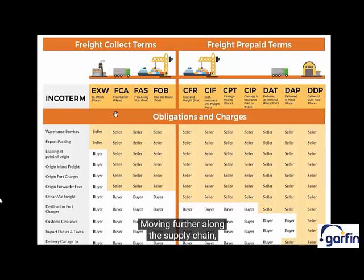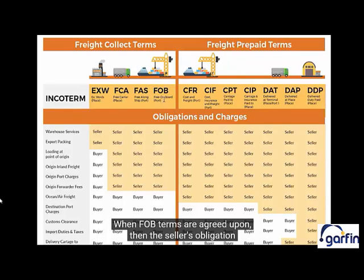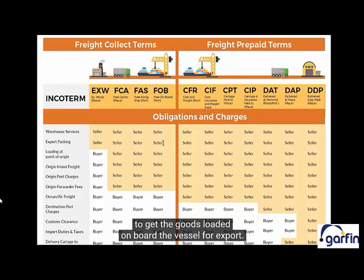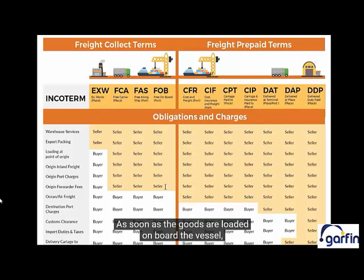Moving further along the supply chain, there are FCA, FAS, and FOB Incoterms. These three terms are quite similar, but the most popular Incoterm used is FOB, Free On Board. When FOB terms are agreed upon, the seller's obligation is to supply the goods and also to pay for all additional charges to get the goods loaded on board the vessel for export. So the seller will cover all loading charges, inland freight charges to the port, origin port handling charges, export customs clearance, and origin forwarder fees. As soon as the goods are loaded on board the vessel, all further associated costs and risks are transferred onto the buyer.